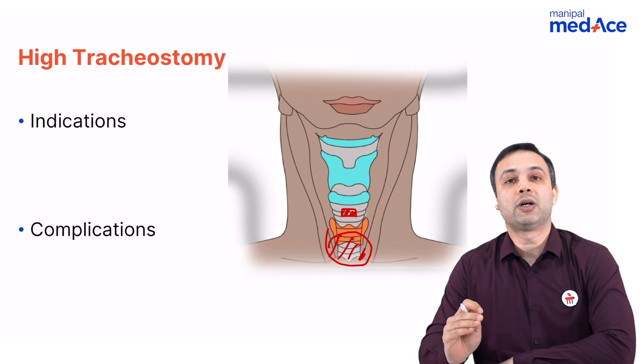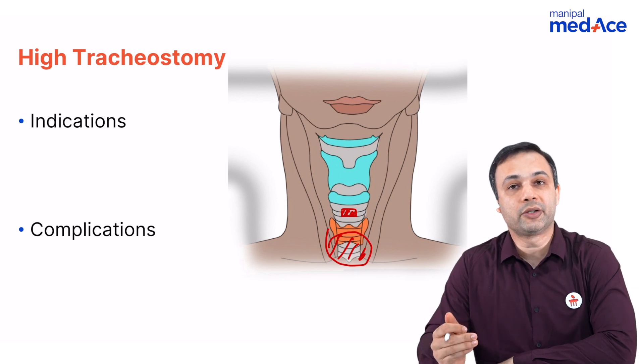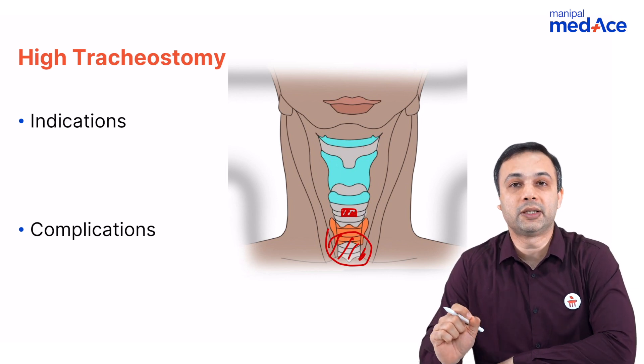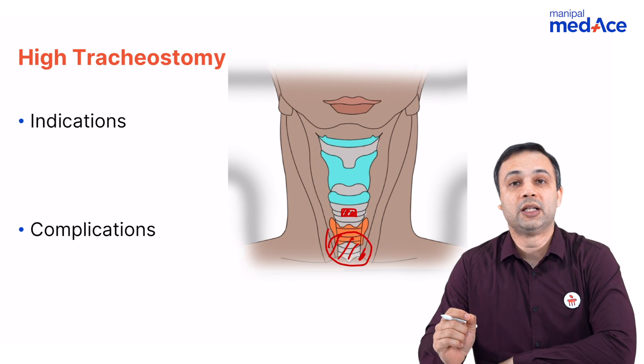When we talk about a low tracheostomy, it is done at the fourth tracheal ring or lower. The most important complication there is innominate artery injury.